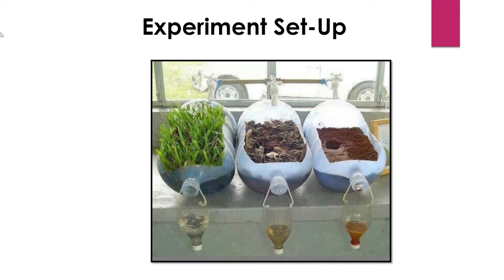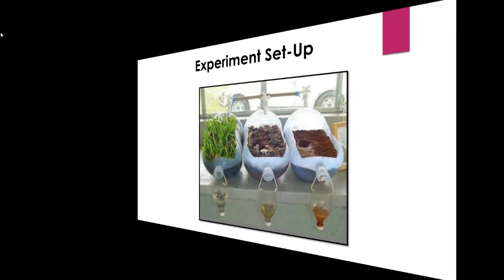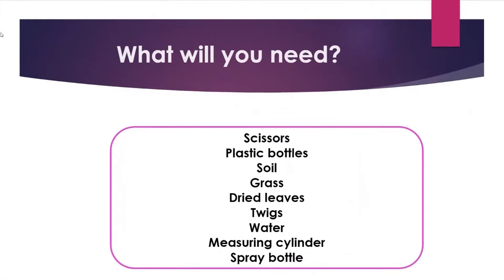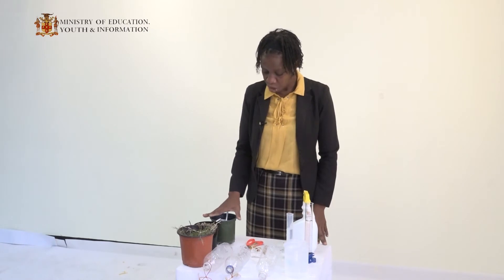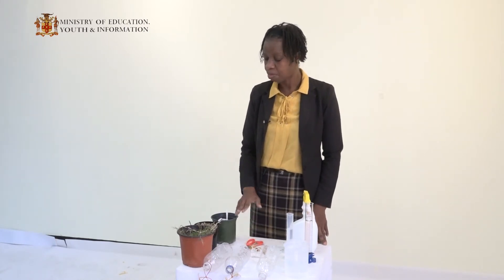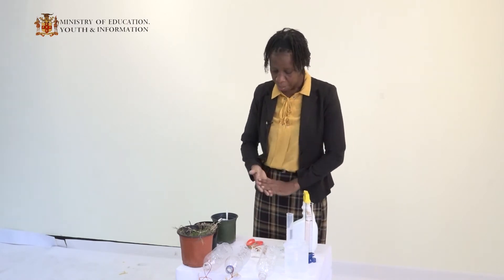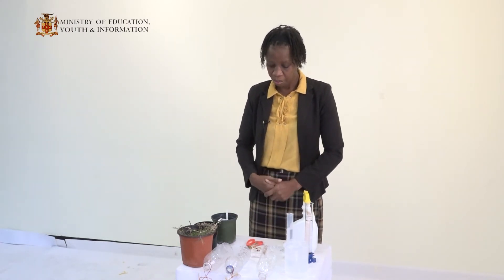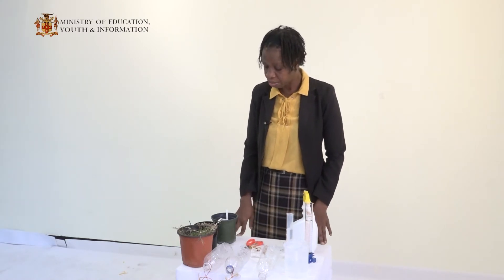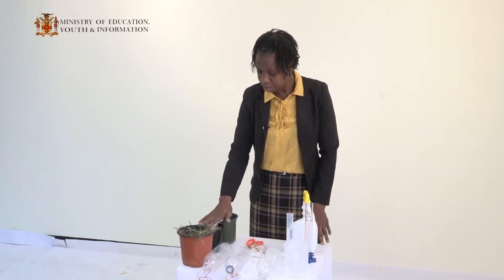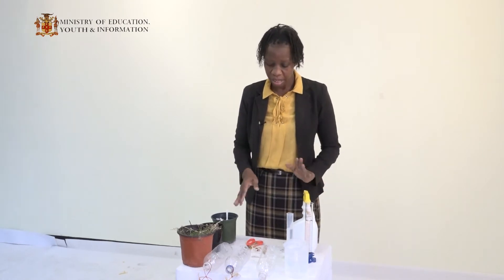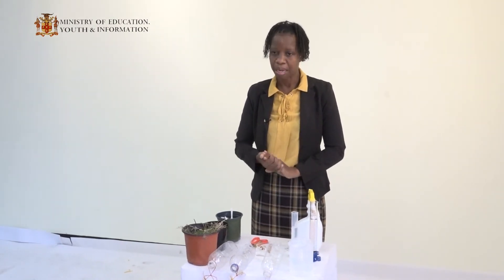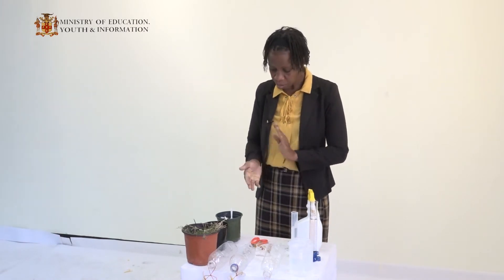For this activity, we need plastic bottles that have been cut, a water spray bottle, soil, a pair of scissors, some string, a collecting container, dried leaves and twigs in a container, and of course grass. We're going to use these materials to show how plants protect the soil.